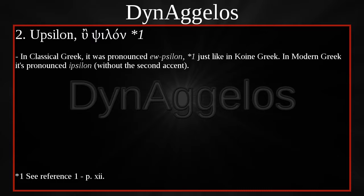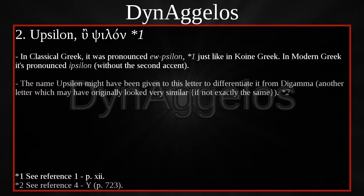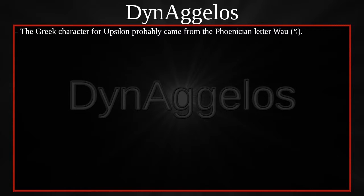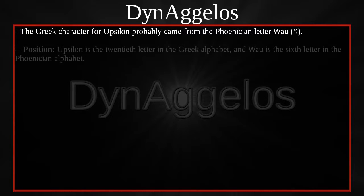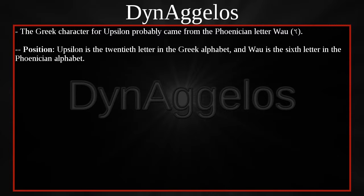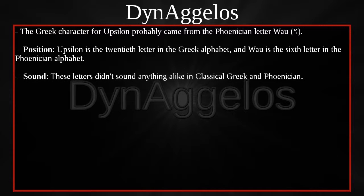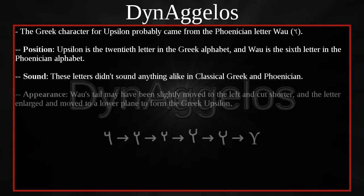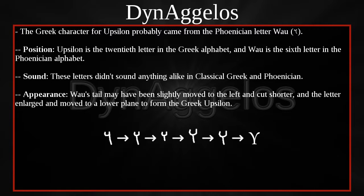YPSILON — in classical Greek it was pronounced YPSILON, just like in Koine Greek. In modern Greek it's pronounced YPSILON, without the second accent. The name YPSILON might have been given to this letter to differentiate it from DIGAMMA, another letter which may have originally looked very similar, if not exactly the same. The Greek character for YPSILON probably came from the Phoenician letter WAU. YPSILON is the 20th letter in the Greek alphabet, and WAU is the 6th letter in the Phoenician alphabet. These letters didn't sound anything alike. WAU's tail may have been slightly moved to the left and cut shorter, and the letter enlarged and moved to a lower plane to form the Greek YPSILON.